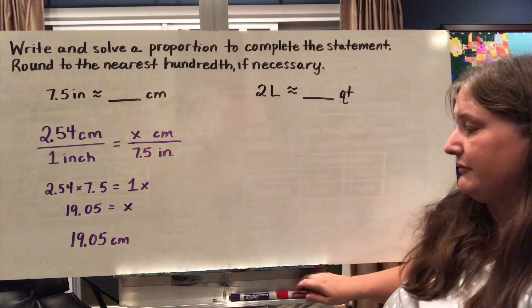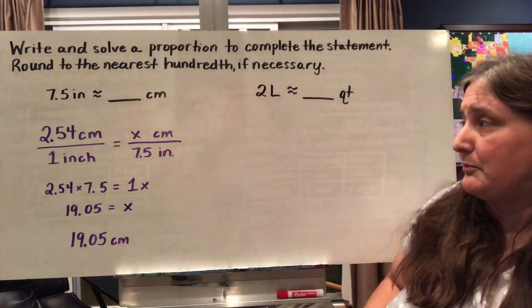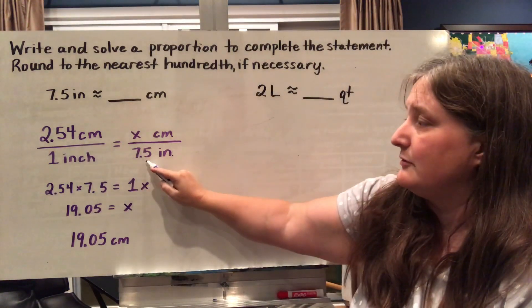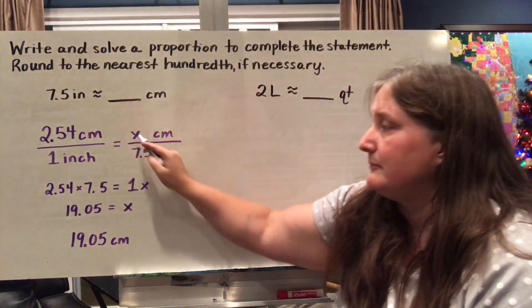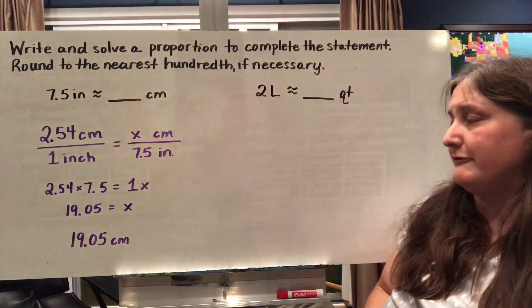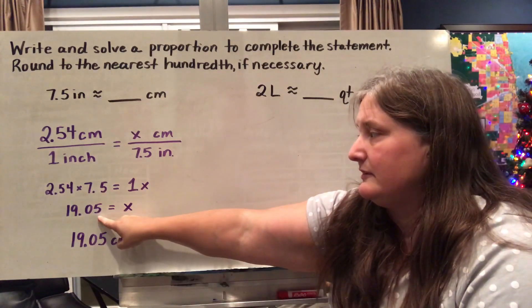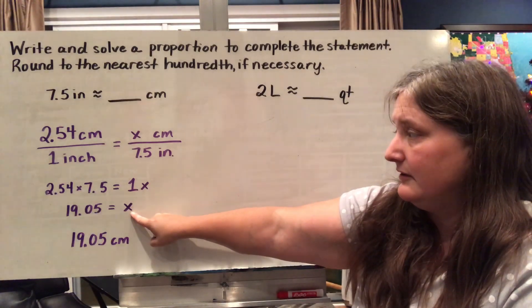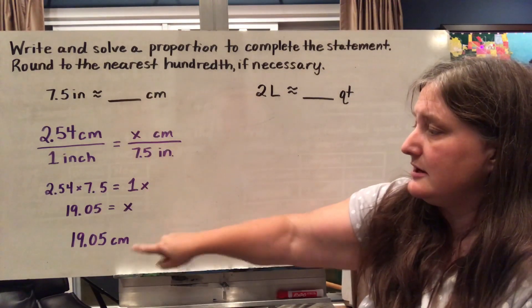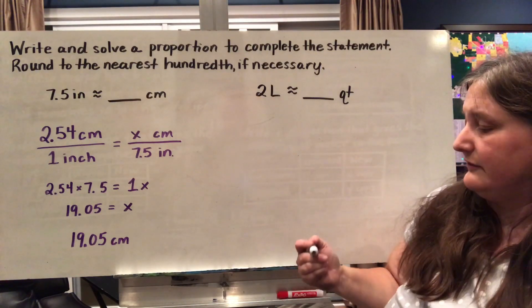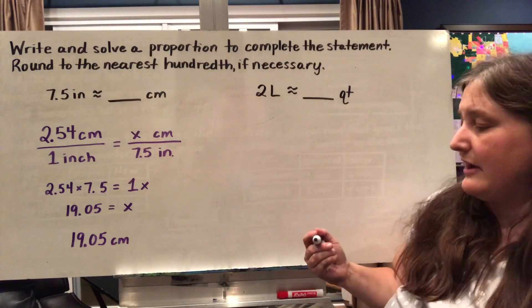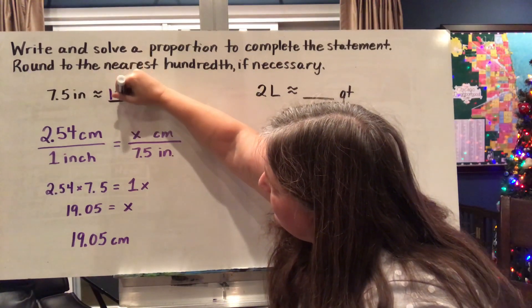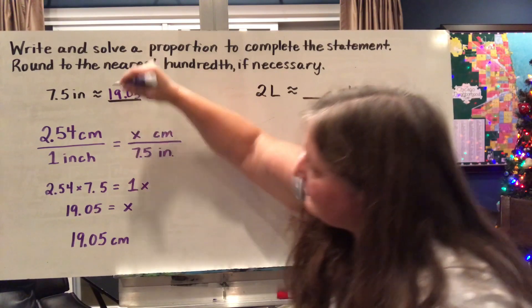Now, in order to solve this one, I'm using cross products. So I'm multiplying 2.54 times 7.5 and one times X. So 2.54 times 7.5 gave me 19.05 and one X can just be rewritten as X. So this missing value here is 19.05 centimeters. So 7.5 inches is approximately equal to 19.05 centimeters.